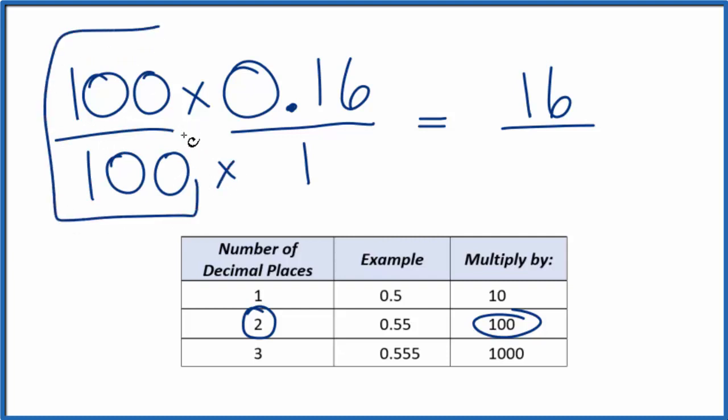Because 100 over 100, that's just 1. Divide 100 by 100, you get 1. 100 times 1 is 100. And now we have this in a fraction form.